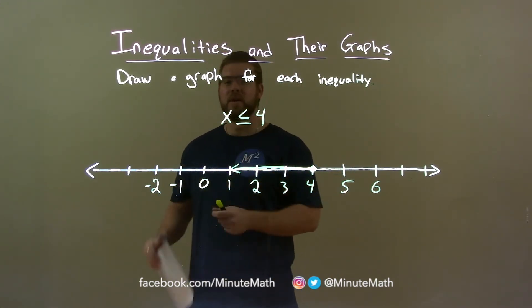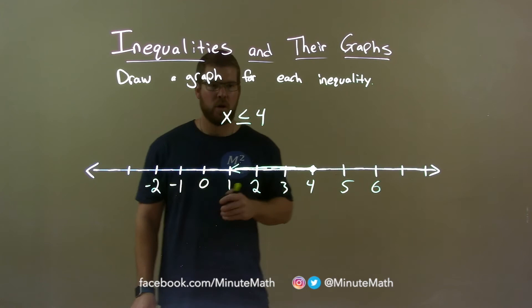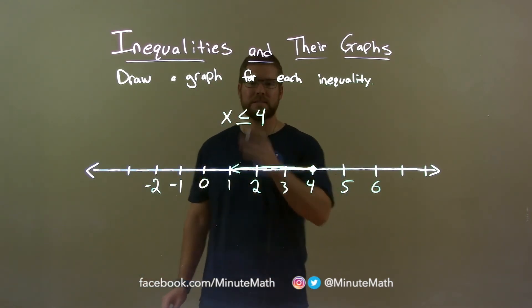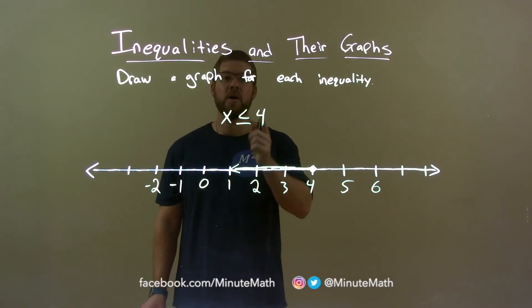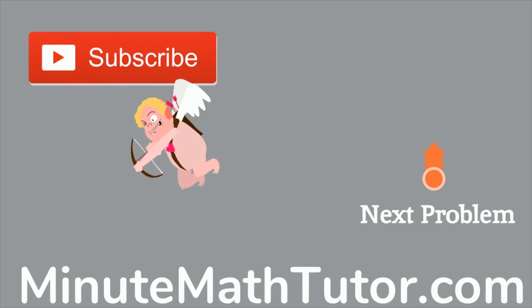So quick recap: we're given x is less than or equal to 4 and we need to graph that inequality. Closed circle at 4 because it's equal to it, and shade it to the left because it's less. So again, here's our graph for x is less than or equal to 4. We'll be right back.